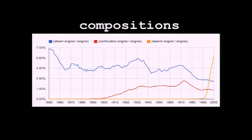We can also do math on these phrases. For example, we can look at steam engine divided by engine — instead of just tracking raw mentions, we normalize one for the other. In 1850, 7% of mentions of 'engine' were preceded by 'steam' because steam engines were a big deal. Then it faded, and in the 20th century we had combustion engines, though they never became quite as big a deal as a written phrase. But just in the last 10 to 20 years, there's an entirely new kind of engine called the search engine.